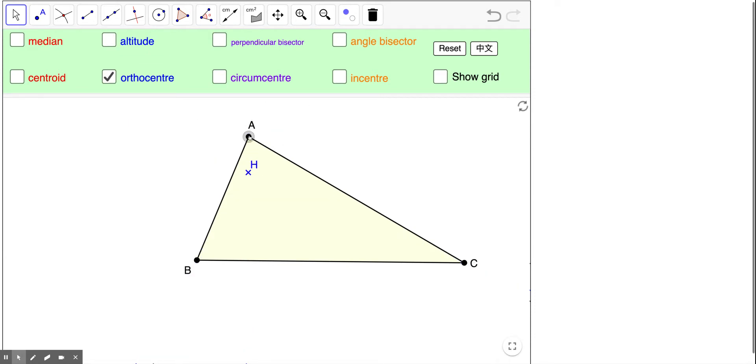You can see that when we change the triangle a little bit, when it changes from an acute angle triangle to become an obtuse angle triangle, the orthocenter will actually change from inside the triangle to outside the triangle.